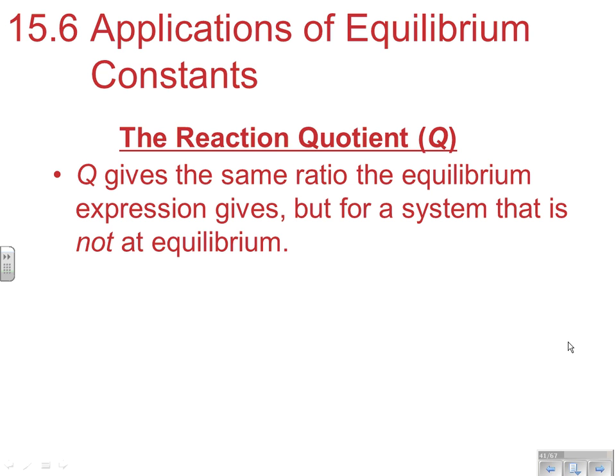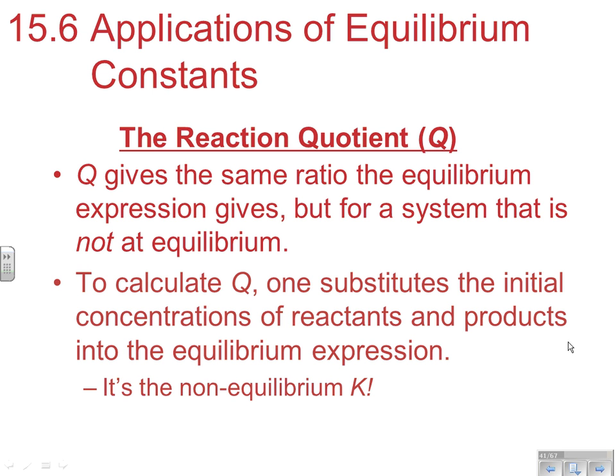What we use is the reaction quotient Q. Now Q gives the same ratio as the equilibrium expression. So basically the Q equation is the exact same as the K equation. The difference is we don't really know if we're at equilibrium or we definitely know we're not at equilibrium, so the concentrations we're plugging in won't give us a K value. To calculate Q, one substitutes the initial concentrations of reactants and products into the equilibrium expression.